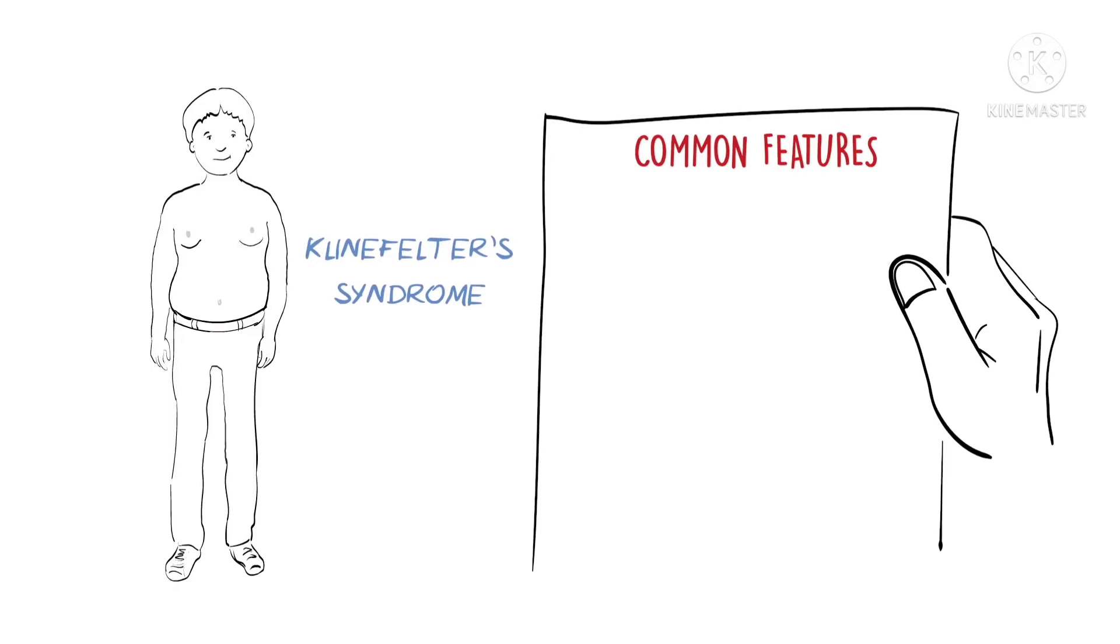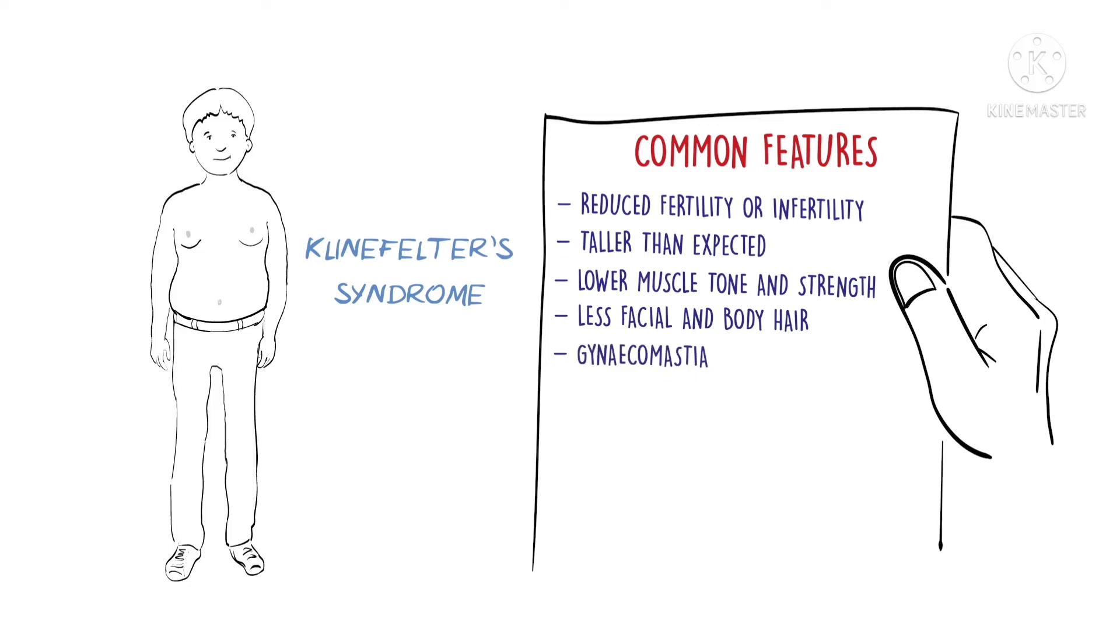However, the lower levels of testosterone and the extra chromosome can lead to some of the following features: reduced fertility or infertility, being taller than expected and with slight changes to body shape, lower muscle tone and strength, less facial and body hair, sometimes more breast tissue called gynecomastia, low mood and anxiety, finding social situations difficult, and low energy levels.